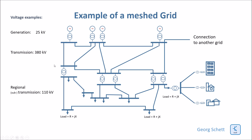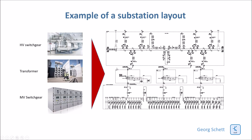The individual bars with transformers in between represent substations, and real substations look a little more complex. Here is an example of a 420 kV substation at the top level, with three transformers, and a medium voltage substation at the bottom. You can see the corresponding equipment: medium voltage switchgear, power transformers, and a gas-insulated high voltage switchgear.